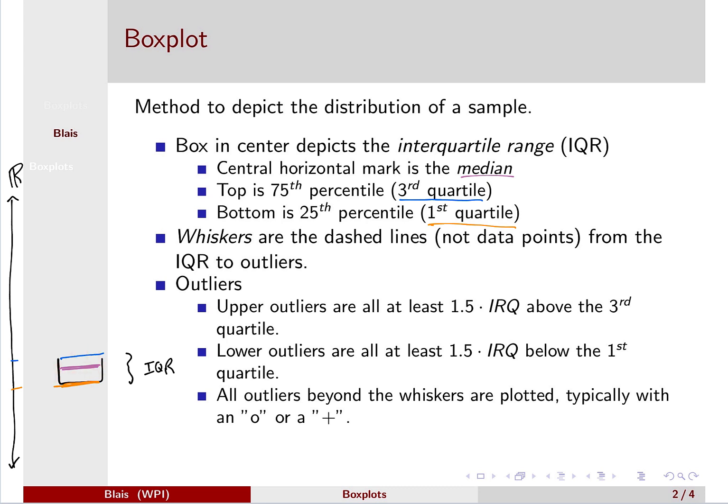We then draw what are called whiskers, and the whiskers do not represent data. They're just dashed lines and it tells us something about how spread out the data is. And the way the whiskers are drawn, we'll start with the top.